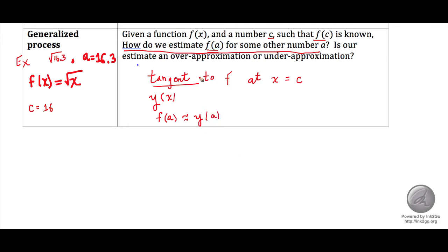And the tangent line, we can write it this way. This is really equal to the slope using point slope form. So the slope at c times x minus c plus y of c.